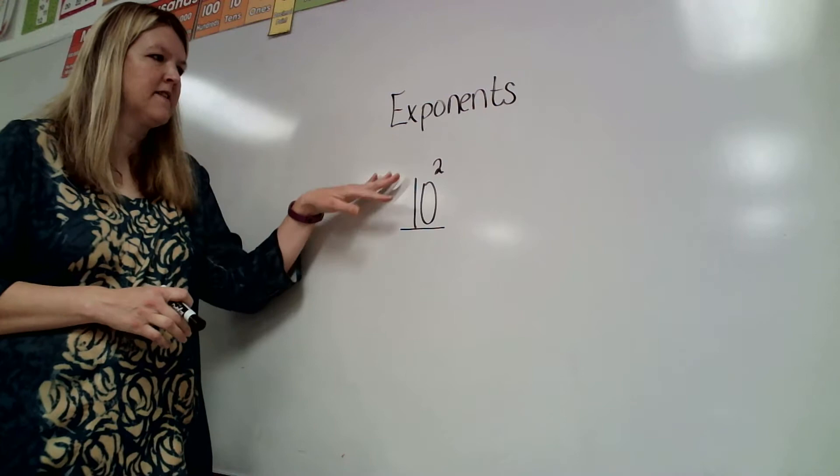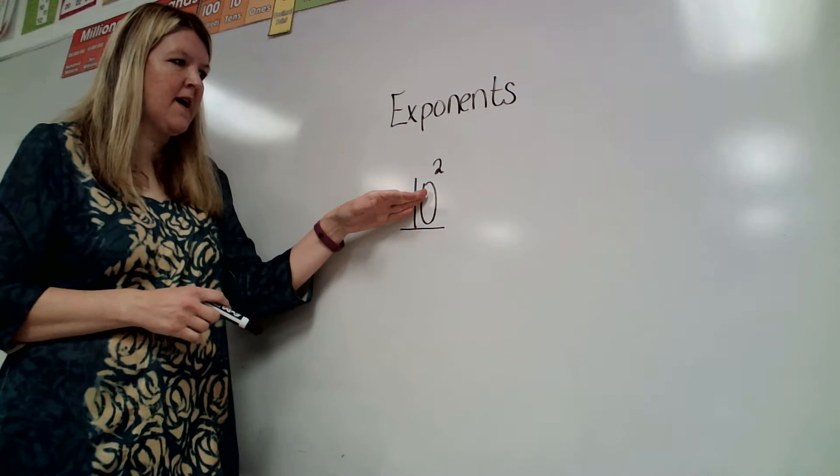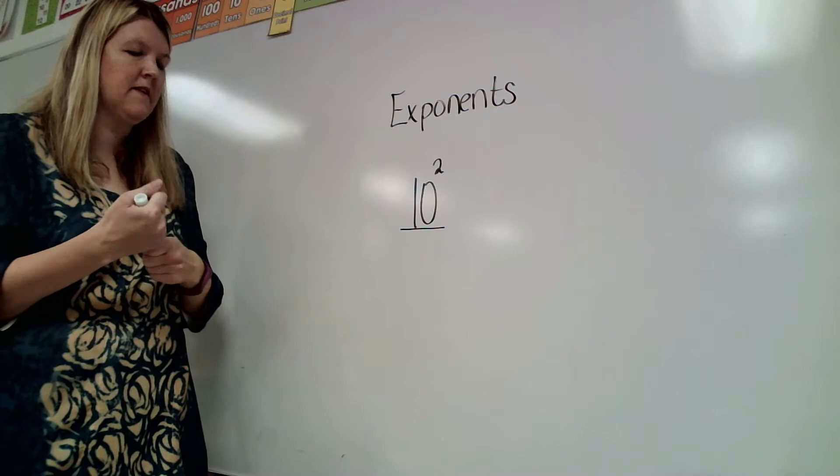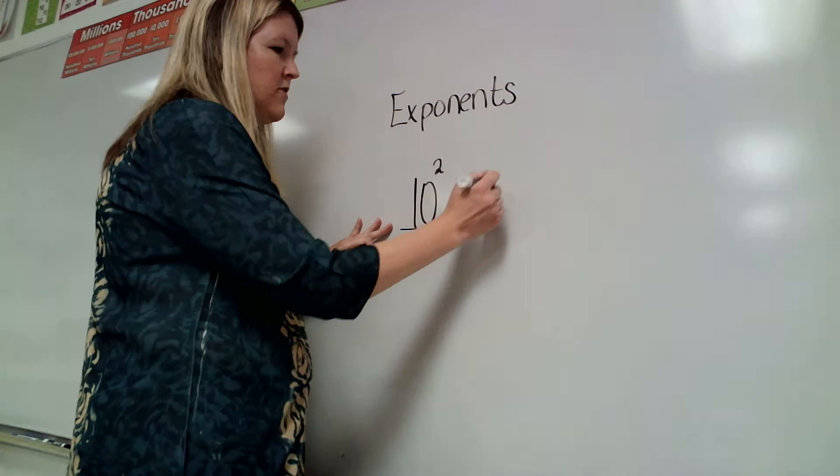Alright, we're going to look at powers of 10 today and how we can write these with exponents. So this big number here, the 10, is called the base and then this little number is called the exponent. And the exponent tells us how many times that we need to multiply the base.